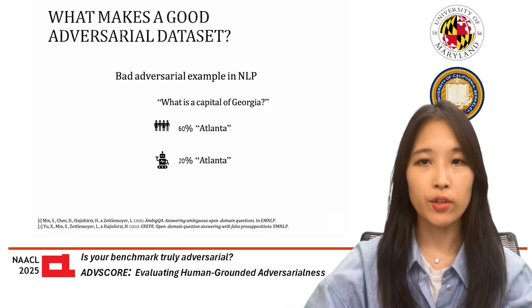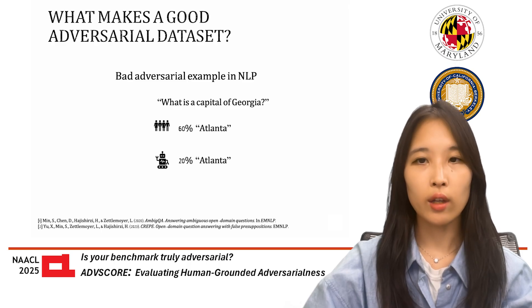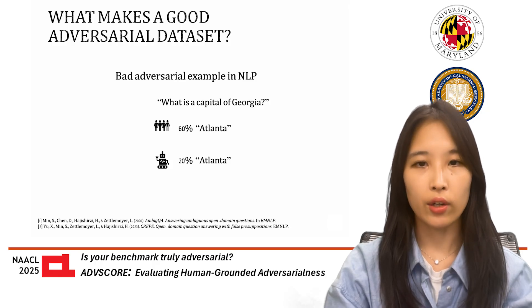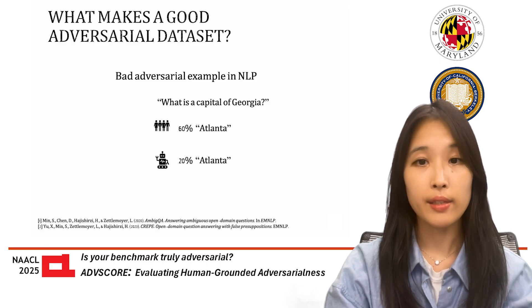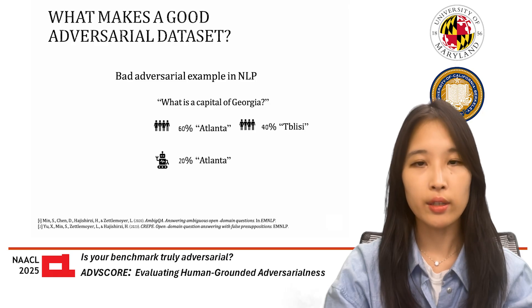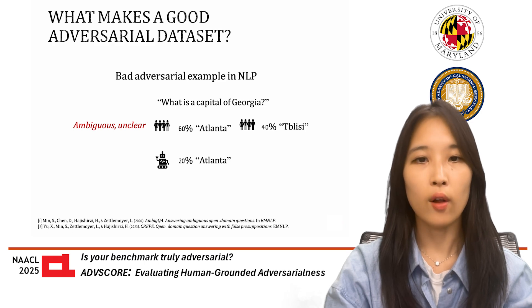So what makes a good adversarial dataset in language? One of our central arguments is that you can't just look at raw accuracy. Let's take an example: what's the capital of Georgia? Humans get nearly 60% accuracy if the answer key says Atlanta, but computers get 20% accuracy. Does this mean it's adversarial? No, because it's a bad question — Tbilisi is also a reasonable answer that smart humans may give.